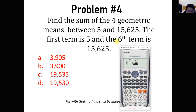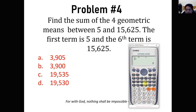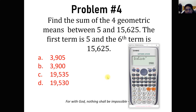Click AC, then use the summation function. We still use x, then SHIFT STAT, REG, y-hat, then comma. This time we want the sum from 2 to 5 — the four geometric means, not including the first or the sixth term. Enter 2, comma, 5. Upon entering, we get 3,900 as the sum of the four geometric means between 5 and 15,625.